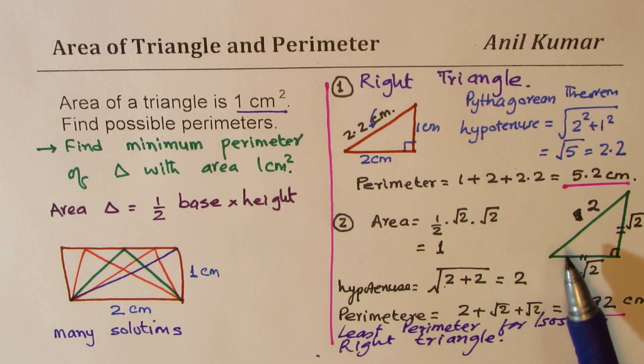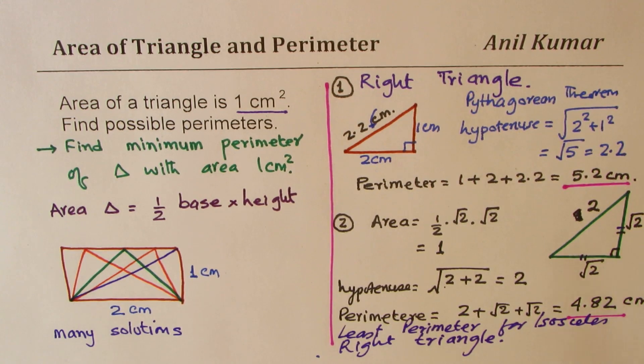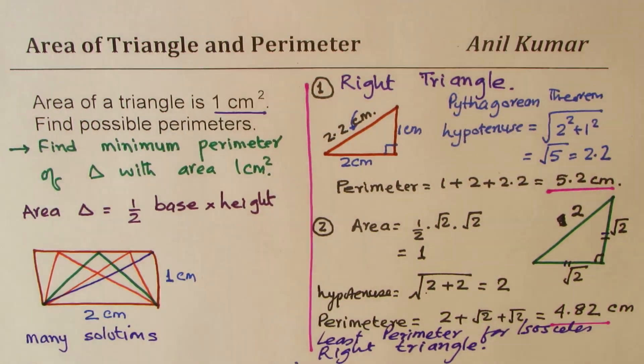Try with some more numbers and verify, you'll find that the minimum perimeter for one square centimeter area of a triangle will be 4.82 centimeters as calculated.